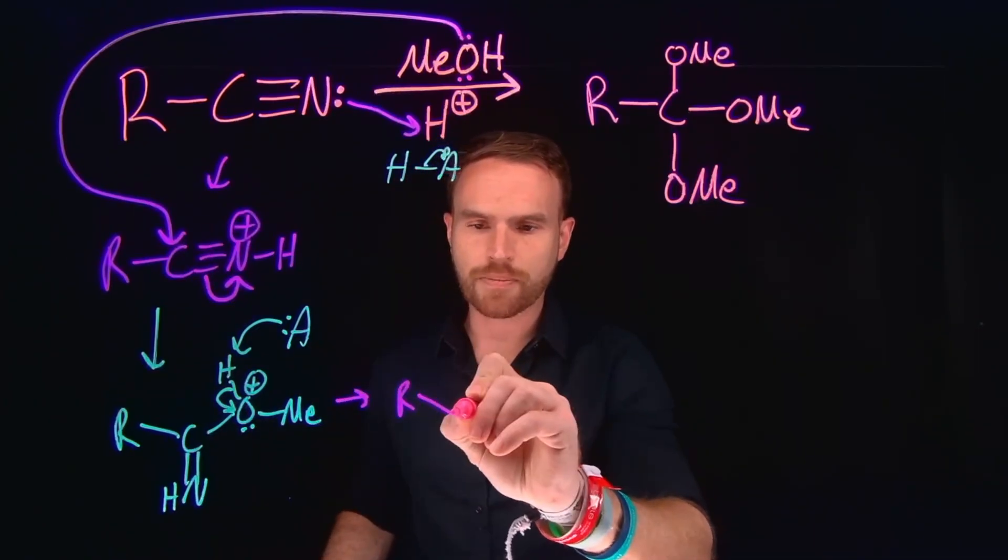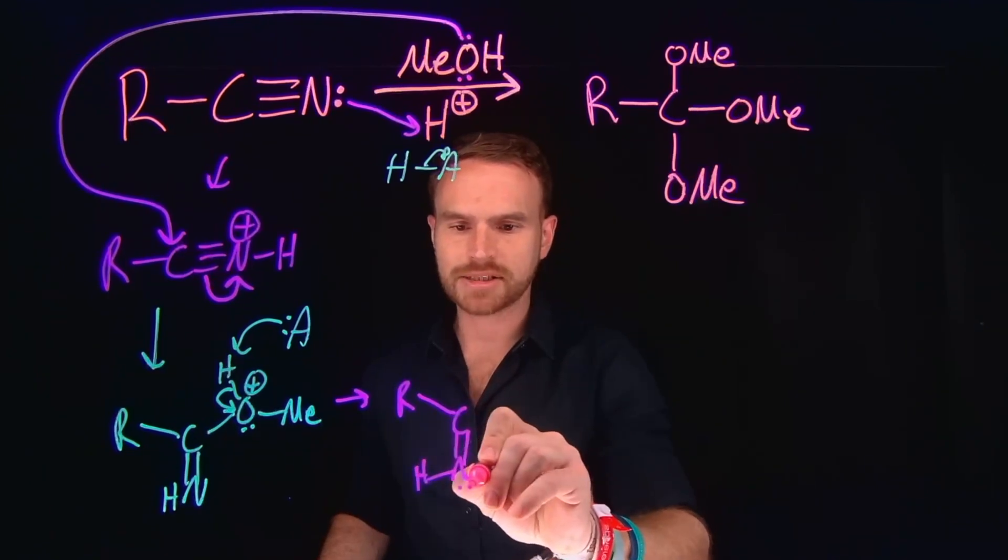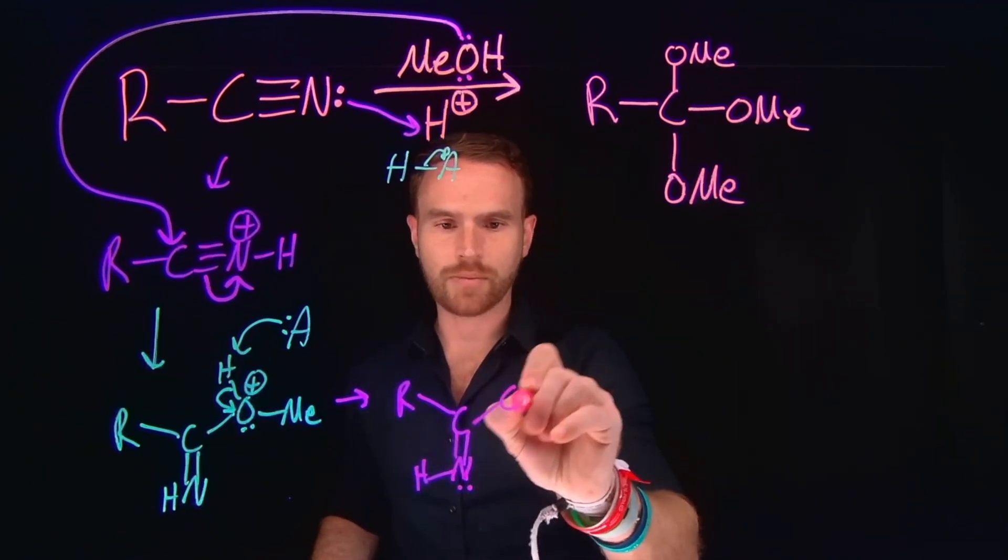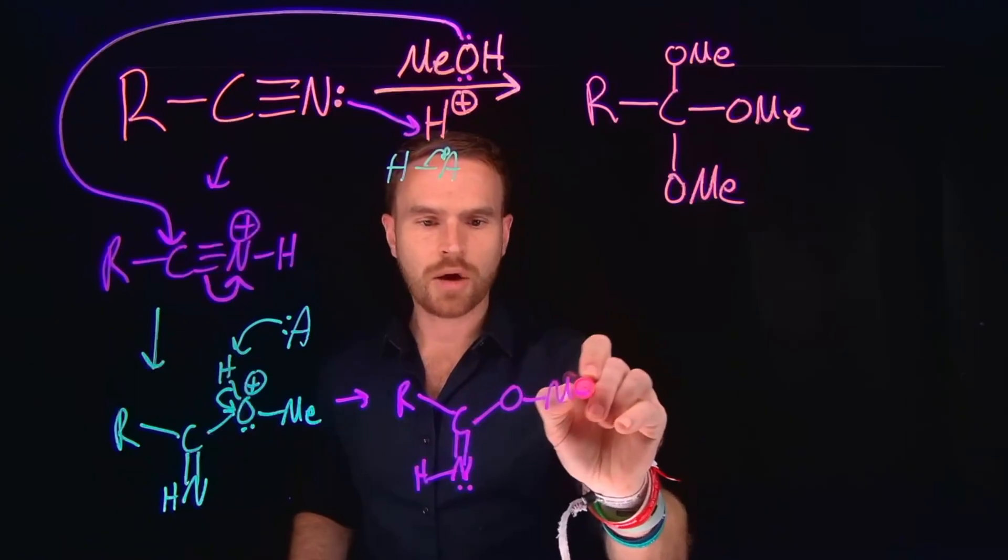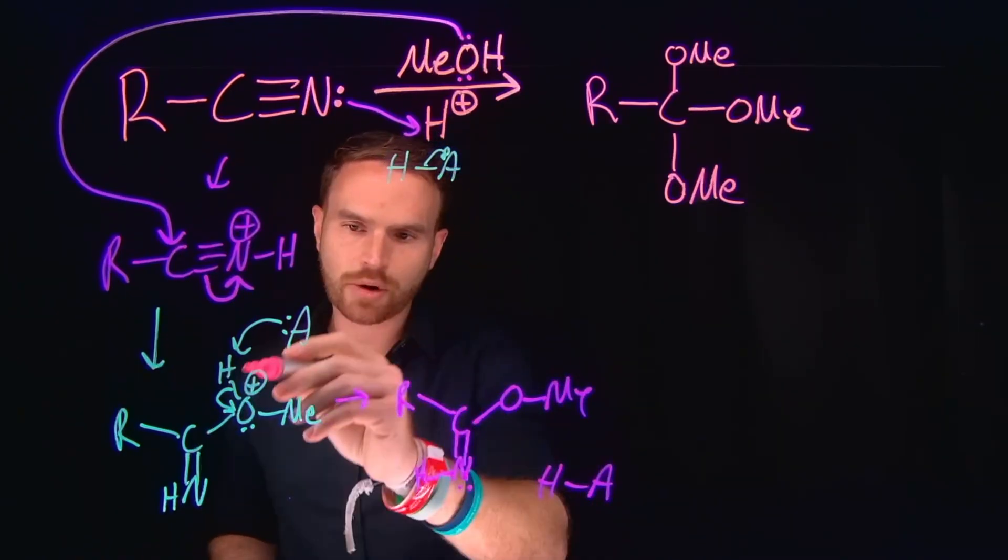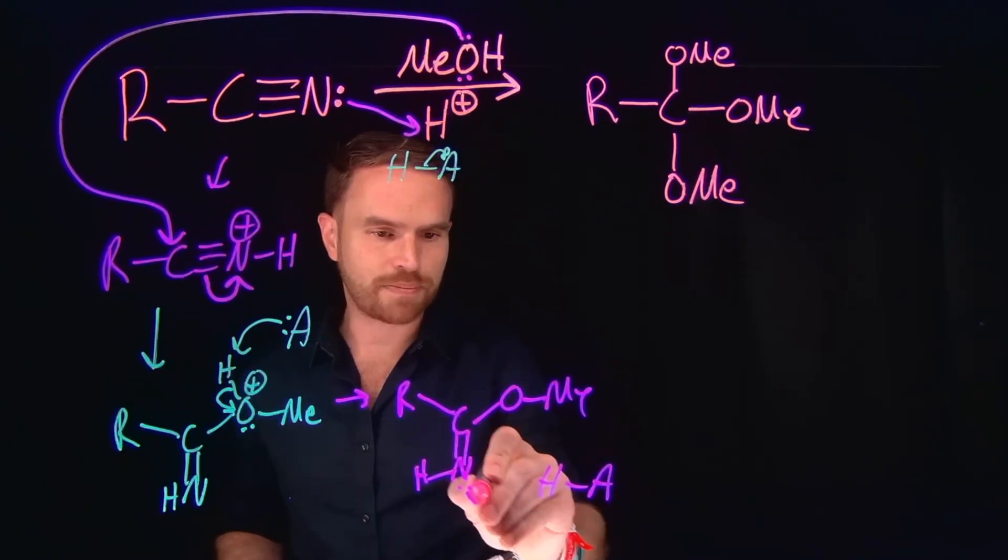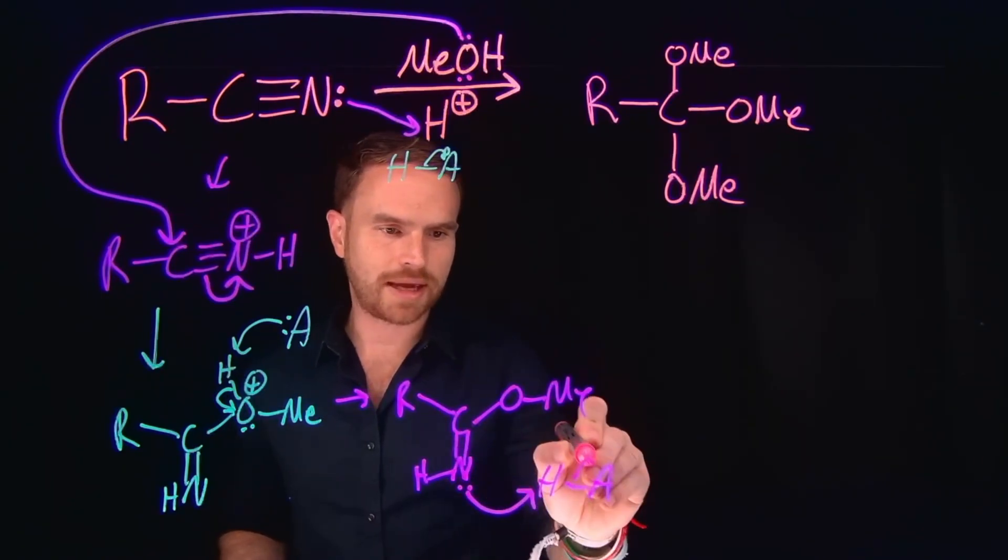And once we've done that, we can actually undergo another proton transfer, except for this time, what we're going to end up doing is because now we have this neutral nitrogen and we also have this neutral oxygen, what will happen is that that acid that we regenerated by deprotonating this former alcohol can actually come and actually protonate this nitrogen to make it positively charged.